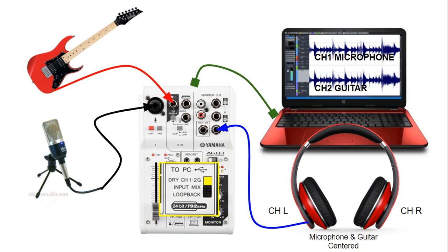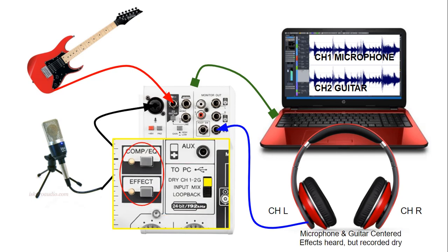When you have the routing switch set to dry channel 1 and 2G, the audio source from the microphone as well as the guitar are directly sent to the USB output — channel 1 for the microphone and channel 2 for the guitar. The signal is routed directly after the gain of the microphone into channel 1 and for the guitar straight after the gain button. So even though you might have the microphone fader all the way down or effects turned on, the signal sent to channel 1 of the USB is not affected. This also applies to the guitar amp sim built into the unit.